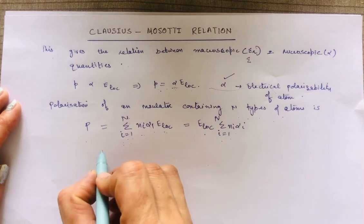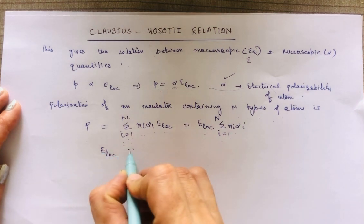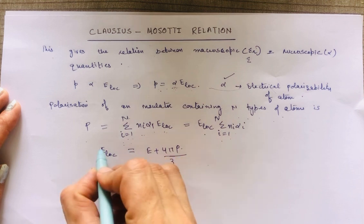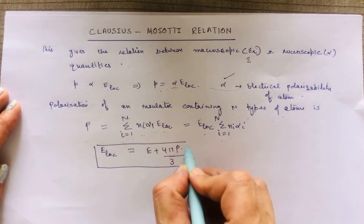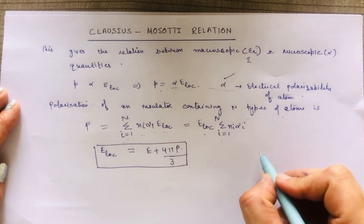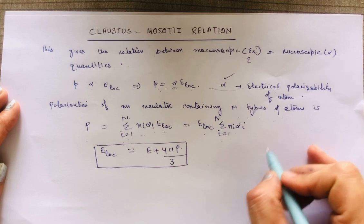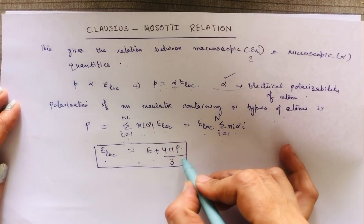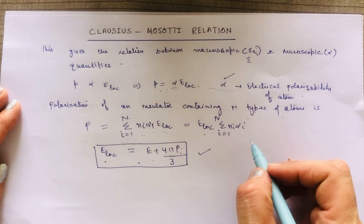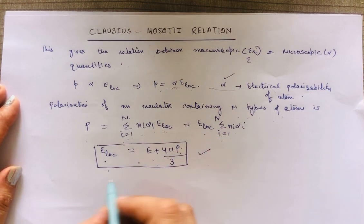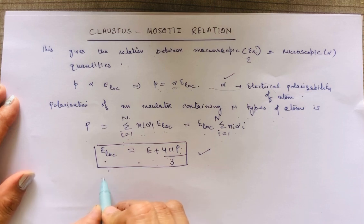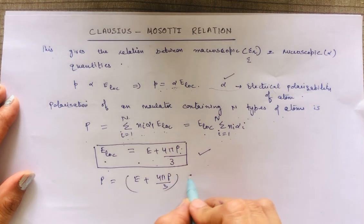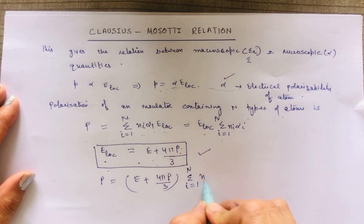We can take E_local outside the summation: P = E_local · Σ(i=1 to n) N_i · α_i. Now, from the previous article, E_local = E + (4π/3)P. That is, E_local is the sum of four types of electric fields, and for isotropic material we take E_M = 0 due to symmetry. So E_local = E + (4π/3)P. Substituting this value of E_local, we get P = [E + (4π/3)P] · Σ N_i α_i.